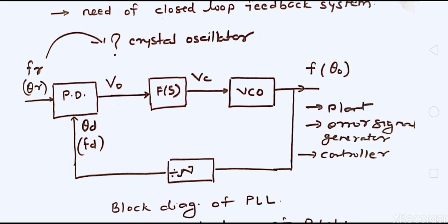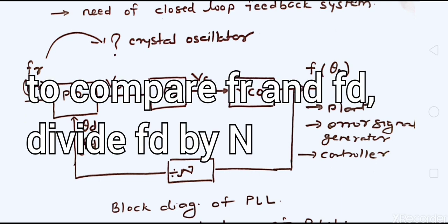In the PLL block diagram, the first block — the error detector — is a phase detector, which takes two inputs: the reference input and the input from the feedback loop. Its output goes to the controller, and the output of the controller manipulates the plant. The plant is the VCO, which generates a constant frequency. This frequency is divided by a factor N to produce a different frequency and fed back to the error detector.